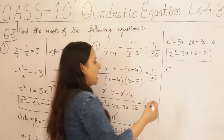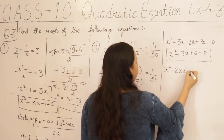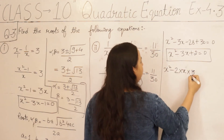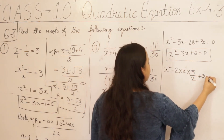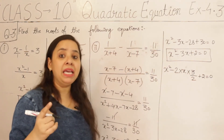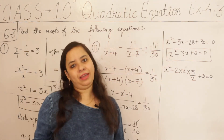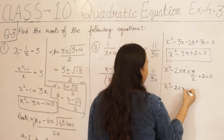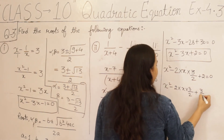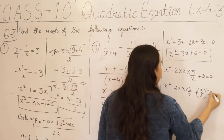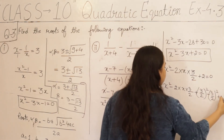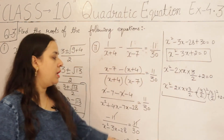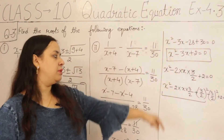How much is b? We divide the coefficient of x, which is 3, by 2 — so b equals 3/2. Now b is found. We add and subtract (3/2) squared: x squared minus 2 times x times 3/2 plus (3/2) squared, add and subtract. Now we apply the formula a squared minus 2ab plus b squared.